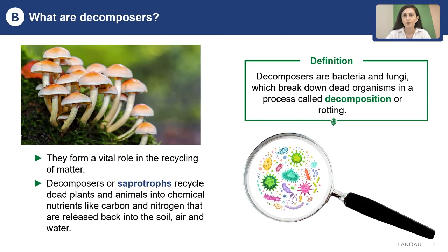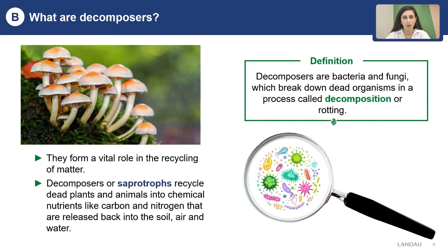Examples of decomposers are fungi and bacteria. They are small organisms which break down nutrients in dead organisms and make them useful for nature to use again. They break down organic matter so it can be used over again in the form of carbon and nitrogen.